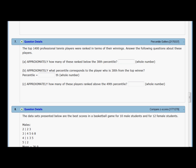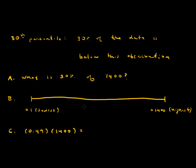Question B says approximately what percentile corresponds to the player who is 30th from the top winner. In this problem, player number 1,400 would be the top winner, and number 1 would be the lowest in terms of winnings. So 30 from the top would be number 1,370 — that's just 1,400 minus 30.